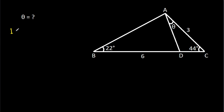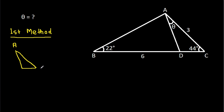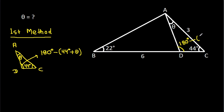The first method: in triangle ACD, this angle is theta and this angle is 44 degrees, so this angle will be 180 degrees minus 44 degrees minus theta. This angle will be 180 degrees minus (44 degrees plus theta).